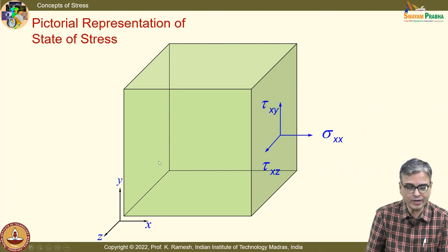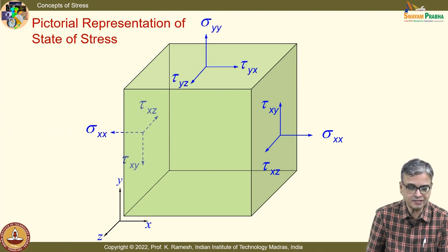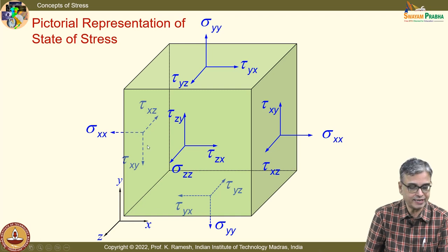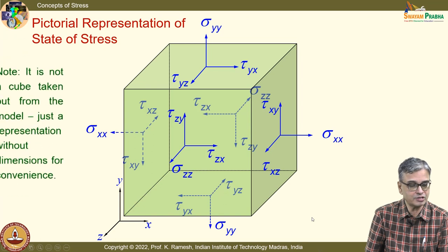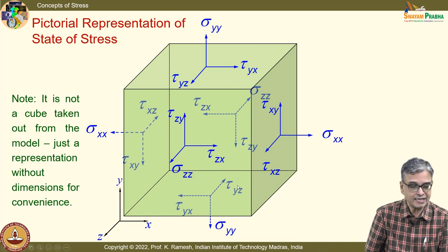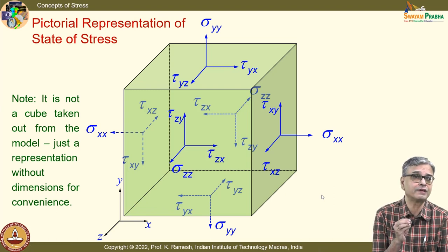These components are represented in a cube — for representation purposes only; the cube has zero dimensions. On a positive plane, positive direction is positive; on a negative plane, negative direction is positive. This goes to the credit of Coulomb. The formalized stress concept dates to 1822 — we are in the 200th year learning this course.